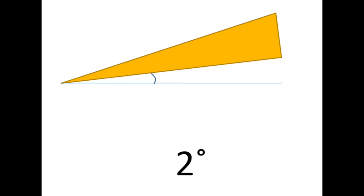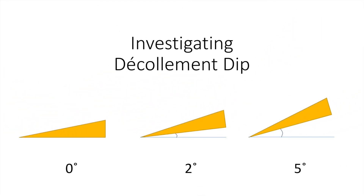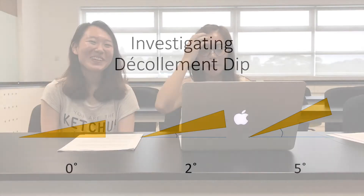For our experiment, we chose a décollement angle at 2 degrees from the horizontal. Our results will then be compared to other experiments run with a flat décollement dip of 0 degrees and a steep dip of 5 degrees. Let's get started with preparing our setup!